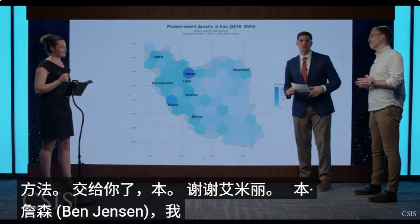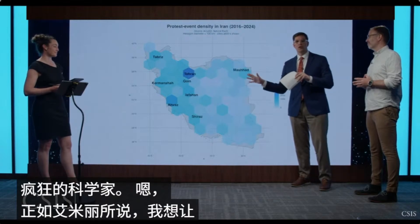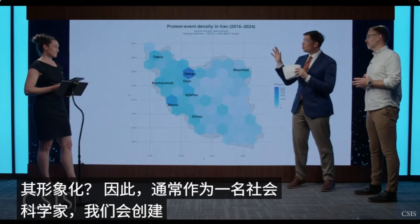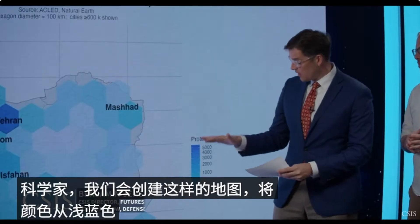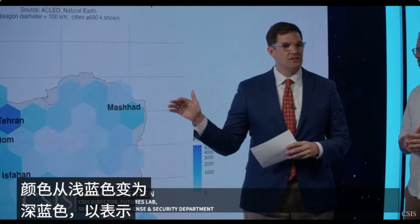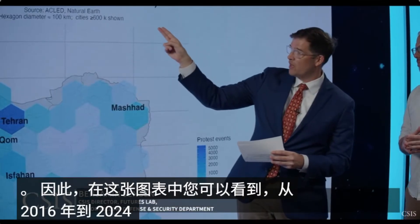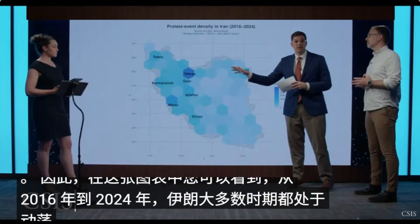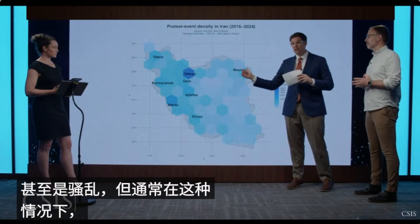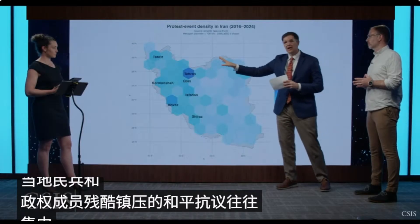Ben Jensen here, director of the Futures Lab. What I want to orient everyone to, as Emily said, is how do we think about unrest? How do we visualize it? Normally as a social scientist, we will create maps like this, where we vary the color from light blue to dark blue to express how many protest events have happened over a particular time. In this chart, you see that from 2016 to 2024, most Iranian periods of unrest — protests, even riots, though usually peaceful protests that are brutally repressed by local militias — tend to be concentrated in urban areas.